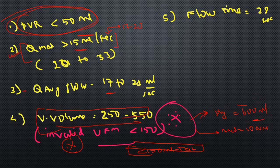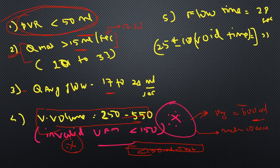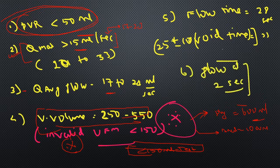Other minor parameters: flow time is usually in the range of 20 to 30 seconds; void time is approximately 25 plus or minus 10 seconds. Void time is usually more than flow time. Flow at 2 seconds is also usually in the range of 10 to 12 ml per second. Time to reach maximum flow is usually in the range of 7 to 10 seconds. These are all the normal parameters for the uroflowmetry graph.